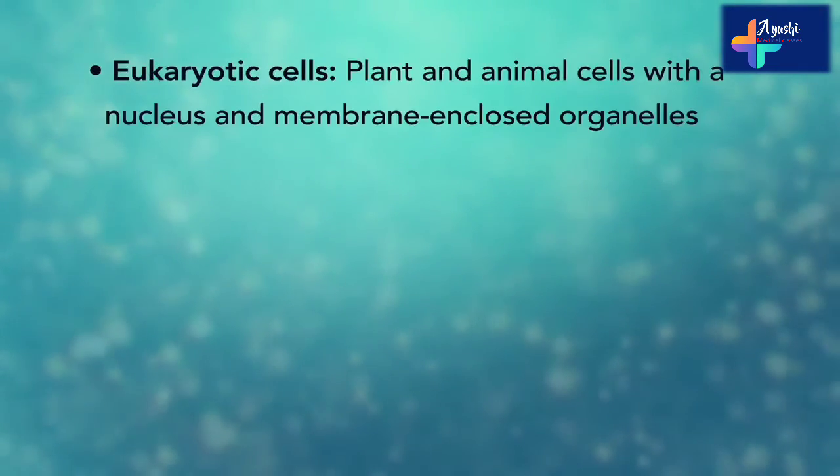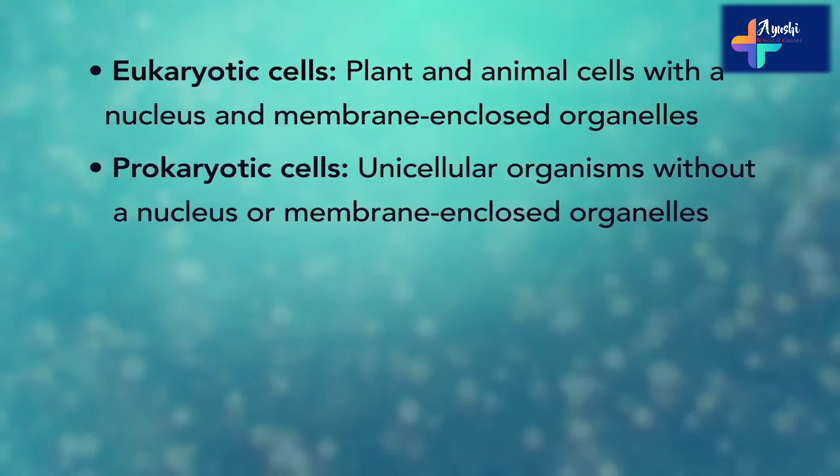In summary, remember: Eukaryotic cells are plant and animal cells with a nucleus and membrane-enclosed organelles. These cells are multicellular, while prokaryotic cells are unicellular organisms without these things.